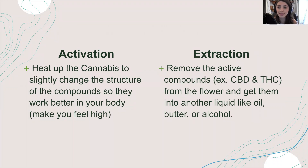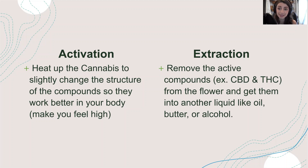There are two main steps involved in the production of cannabis edibles. The first is activation — this is really important because the compound that the cannabis plant actually makes is not the most active compound for our bodies, so we need to activate those molecules before we extract them. The second step is extraction: after we activate those molecules they're still inside the cannabis flower, so we need to extract them and put them into another solution such as an oil or a butter.